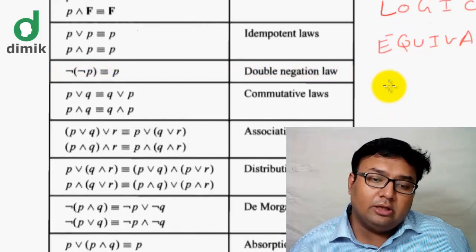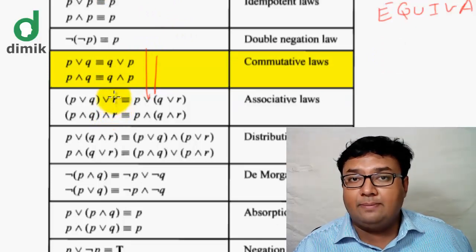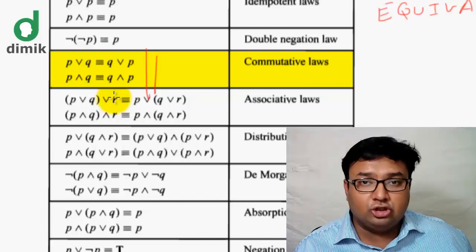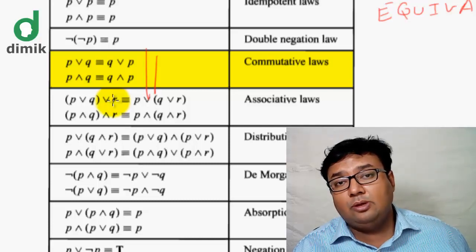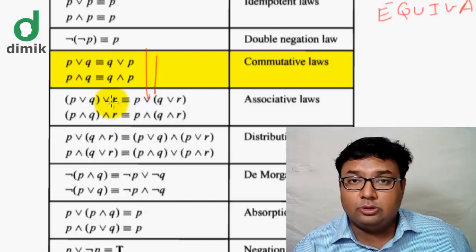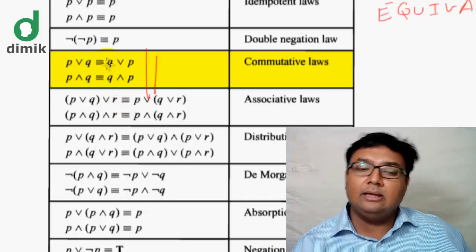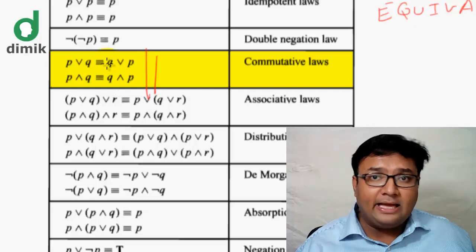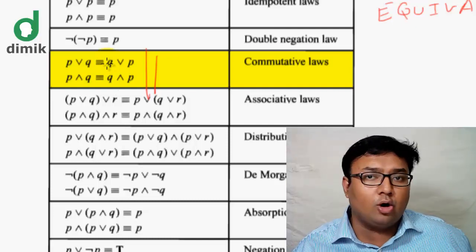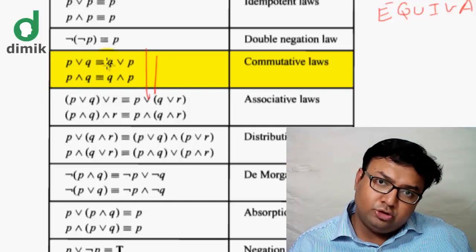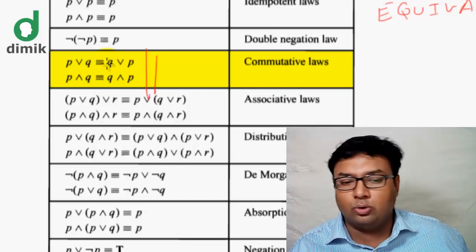This is the Commutative Law, which comes from mathematics. In arithmetic: addition is commutative (a+b = b+a), multiplication is commutative (a×b = b×a), but subtraction is not commutative (a−b ≠ b−a). In logic: P AND Q is equivalent to Q AND P, and P OR Q is equivalent to Q OR P.